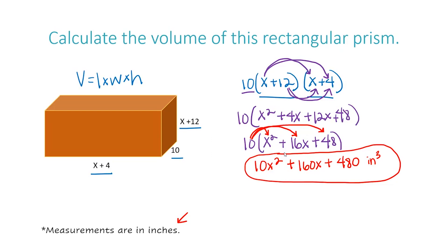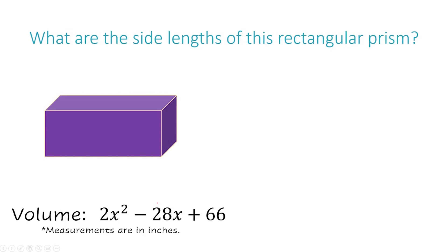Now let's take a look at a problem that has us undo this scenario — we're going to work backwards. This problem asks: what are the side lengths of this rectangular prism? They've given us the volume: 2x squared minus 28x plus 66. I basically need to factor that down into three separate lengths, because volume equals length times width times height. I notice all three whole number coefficients are even, so I should be able to factor out at least a two.